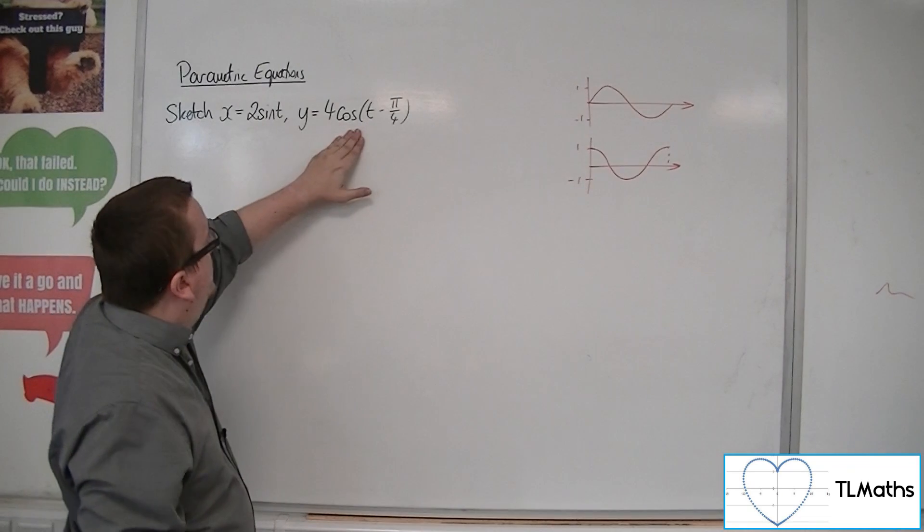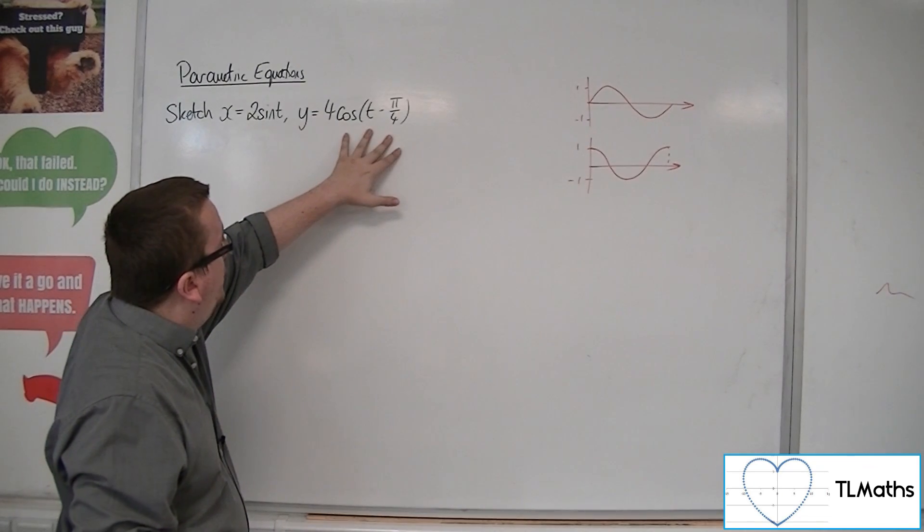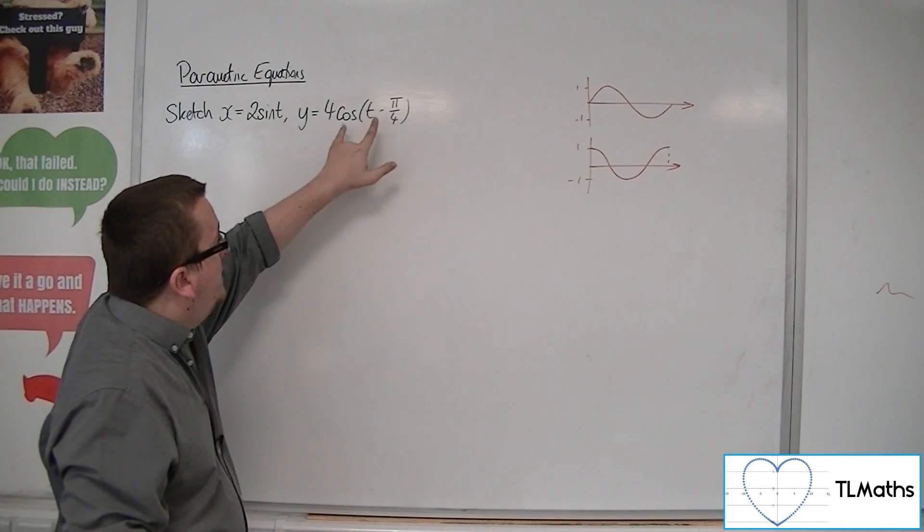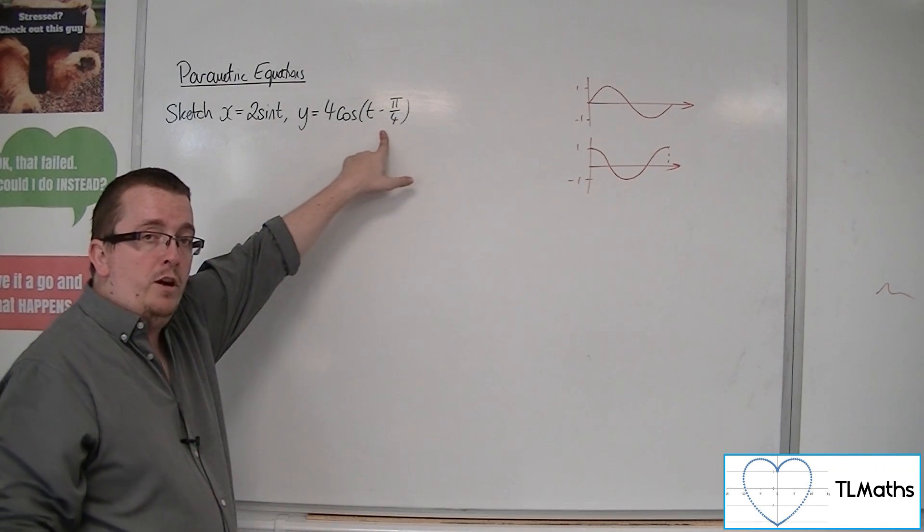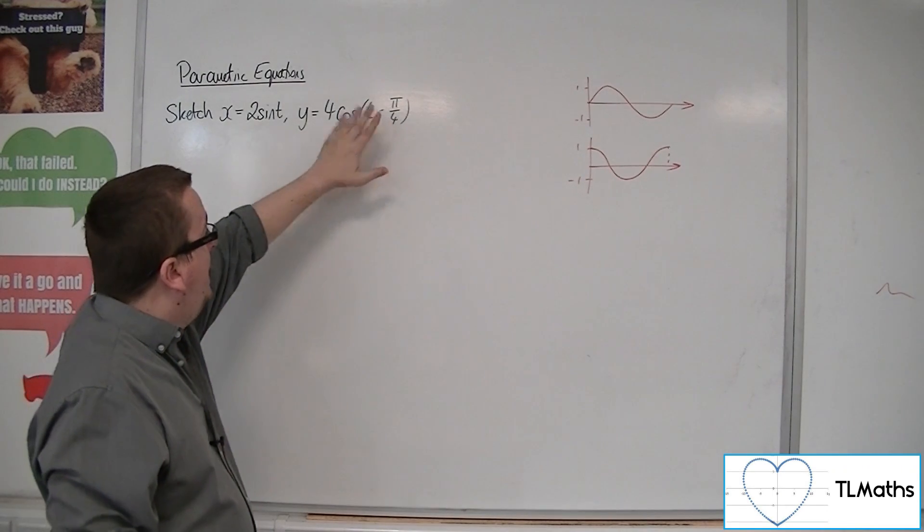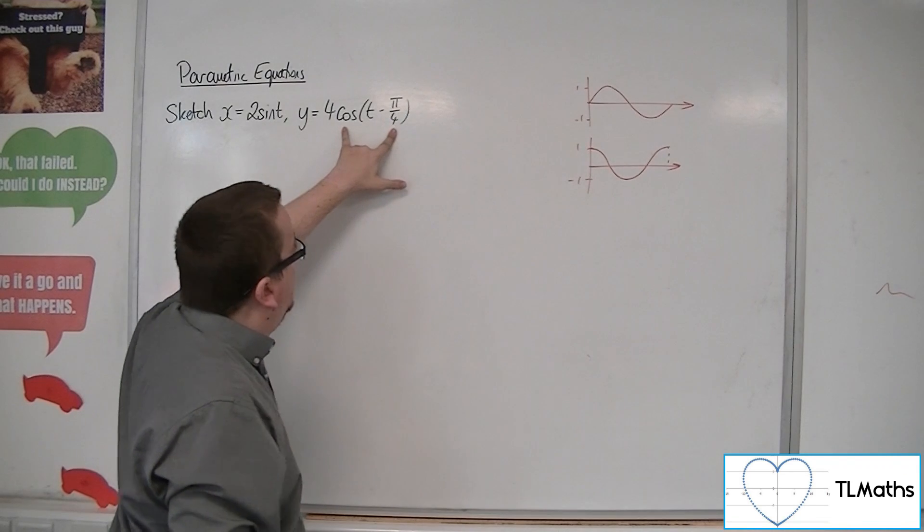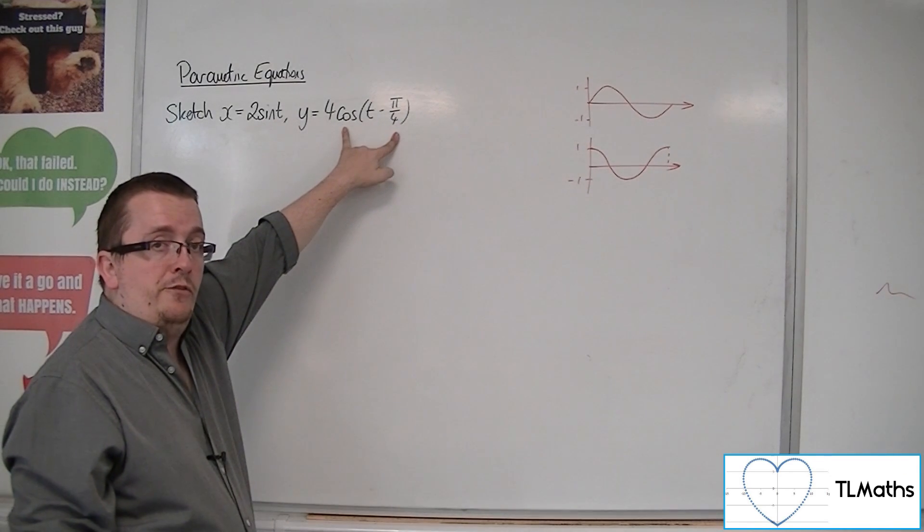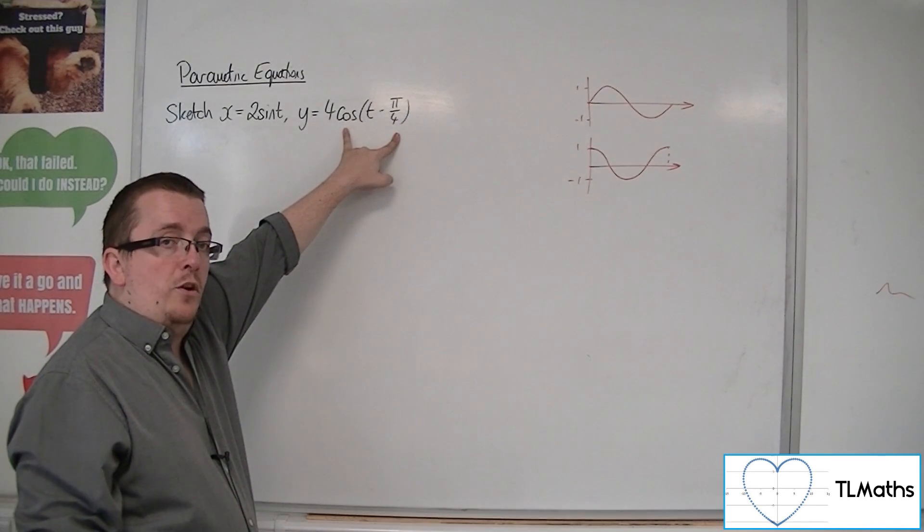And for the y, because you've got four lots of a cosine curve, regardless of the fact that it's been translated by this pi over 4, that doesn't matter. But the fact that cosine of t minus pi over 4 cannot go beyond minus 1 or 1